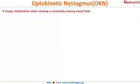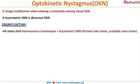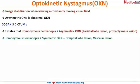Optokinetic nystagmus is an image-stabilization response when viewing a constantly moving visual field. Asymmetric optokinetic nystagmus is abnormal. Cogan's dictum states: homonymous hemianopia with asymmetric optokinetic nystagmus indicates a parietal lobe lesion (probably a mass lesion), whereas homonymous hemianopia with symmetric optokinetic nystagmus indicates an occipital lesion, most probably of vascular origin.